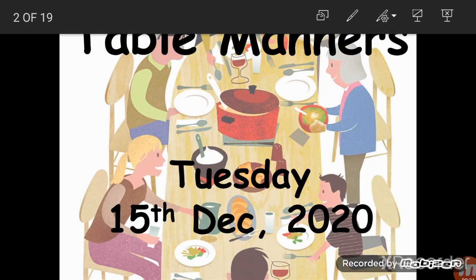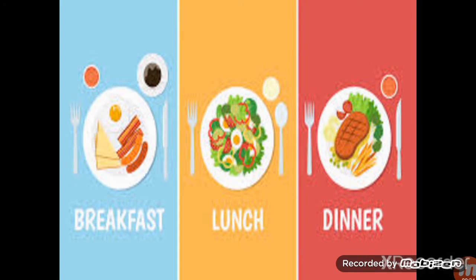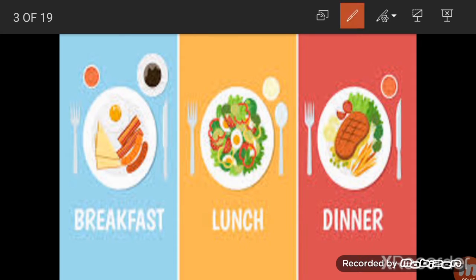Before starting, we should know what the meals are called. The meal that you eat in the morning is called breakfast, and the meal that you eat in the afternoon is called lunch. The meal that you take at night is called dinner. So keep in mind that we eat meals three times a day and all three have different names.